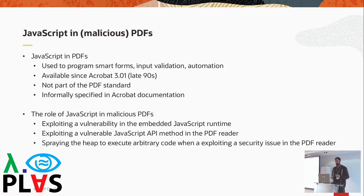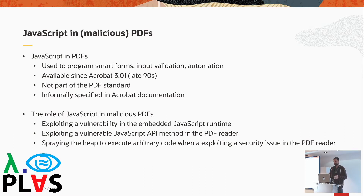When it comes to the role of JavaScript in malicious PDFs, we've seen it used for different things over time: exploiting vulnerabilities in the JavaScript runtime of reader applications, exploiting vulnerable API method implementations, and even when targeting vulnerabilities elsewhere in the reader — like a vulnerable image parser — JavaScript is still useful for heap spraying, putting shellcode somewhere on the heap so that when a vulnerability is triggered, the attacker can cause arbitrary code execution.